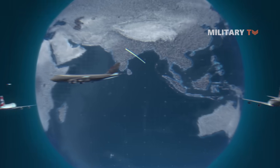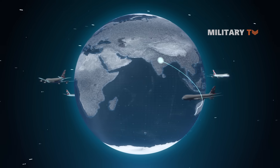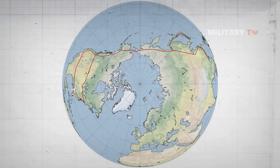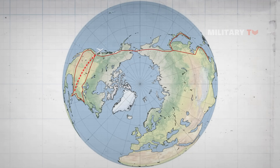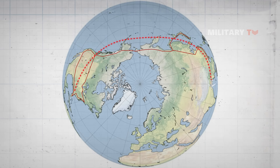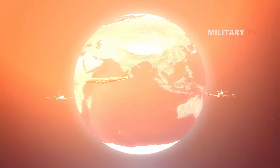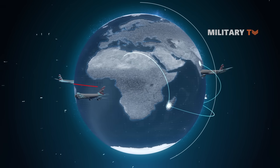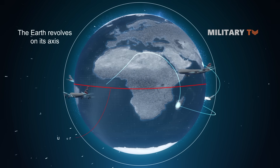The Great Circle Route is a term used when airplanes fly around the circumference of the Earth, and it is mostly noticed for long flights from the US to Asia. Passengers might wonder why planes fly over Alaska and Siberia rather than what appears to be a shorter straight line. This is because the Earth revolves on its axis, which forces the equator to stretch out and be wider.